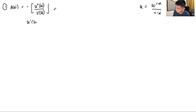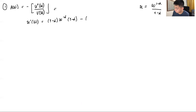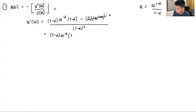Taking the first-order derivative with respect to W using the quotient rule: the derivative of W^(1−α) is (1−α)·W^(1−α−1) = (1−α)·W^(−α). After simplification, the (1−α) terms cancel and we're left with U'(W) = W^(−α). Then the second-order derivative U''(W) is the derivative of W^(−α) with respect to W, which gives −α·W^(−α−1).